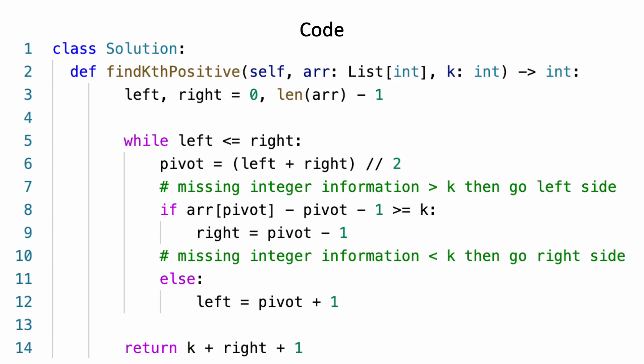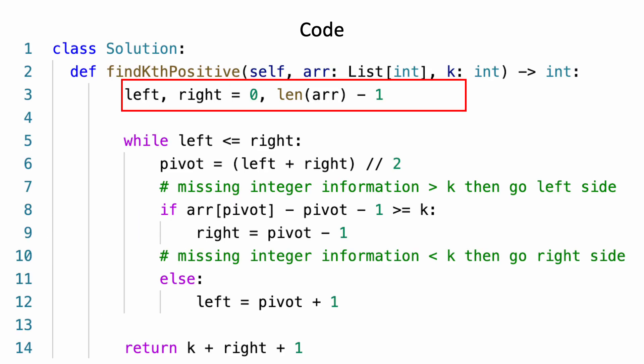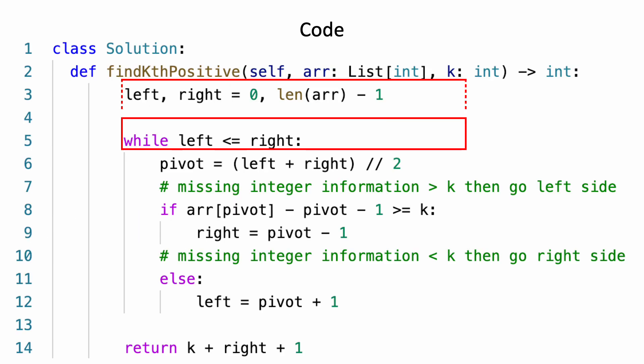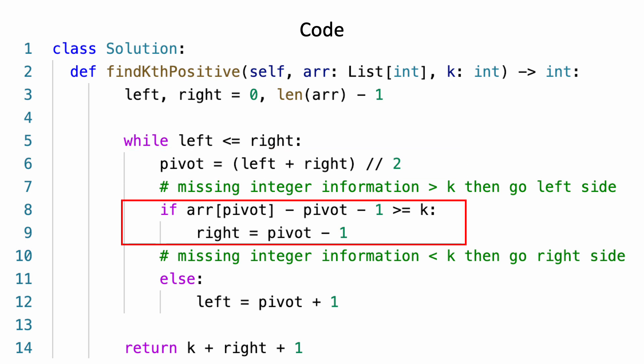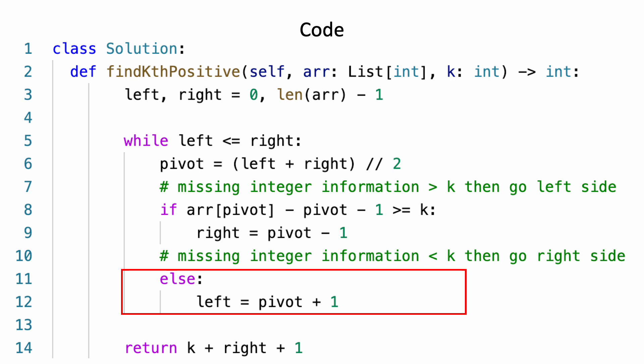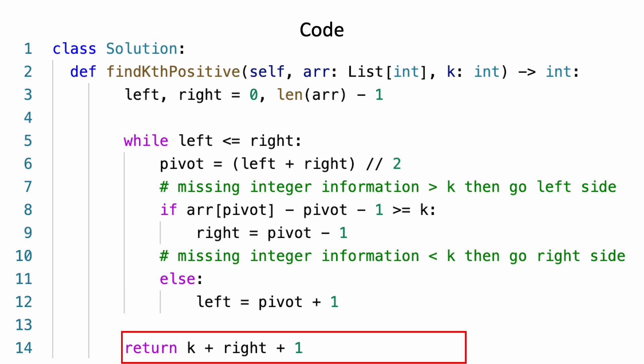Let's look at the code of the solution. We initialize our left and right pointers and start the binary search using a while loop. We select the pivot as the middle element, then check: if the missing integer information is greater than k, we direct our binary search to the left; otherwise, we direct it to the right. Finally, we return the kth missing positive integer.